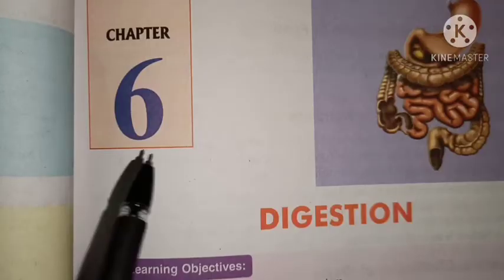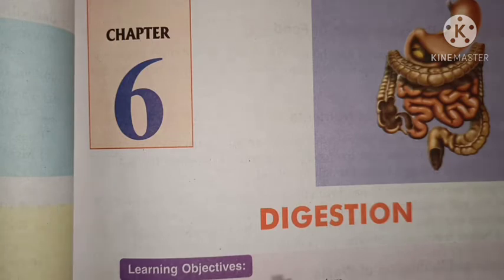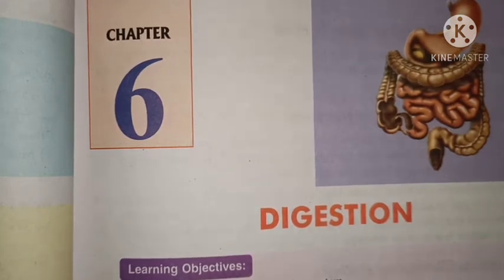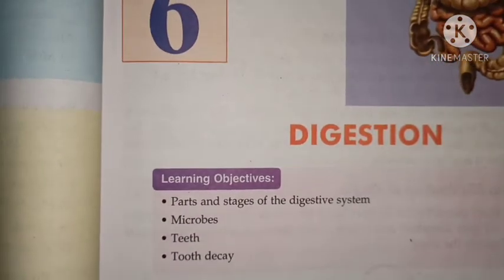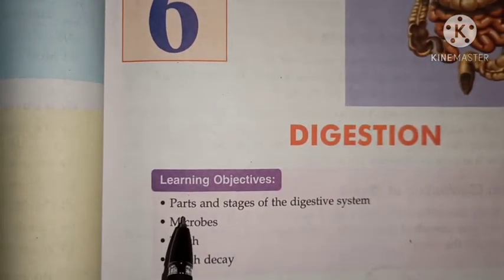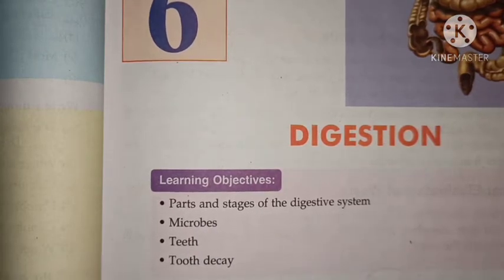Students, this is Chapter 6. Chapter 6 is Digestion. Digestion means what? Our 'pachan tantra' — we call it digestion. Okay students, these are the learning objectives of this chapter. The first is: parts and stages of the digestive system.